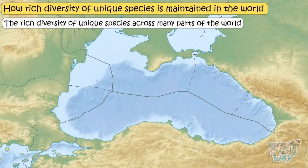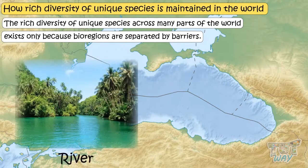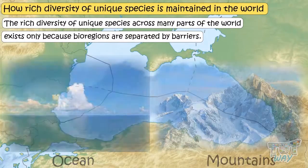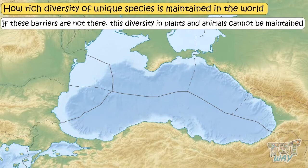The rich diversity of unique species across many parts of the world exists only because bioregions are separated by barriers — particularly large rivers, seas, oceans, mountains, and deserts. If these barriers were not there, this diversity in plants and animals could not be maintained.